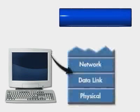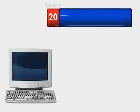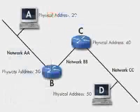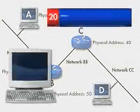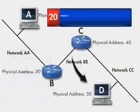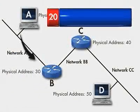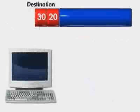Next, the packet arrives at the data link layer. The device adds its own physical address, 20, to the packet and then attempts to locate the physical device address of the destination device. In this example, the destination device is on a different network. Instead of using the physical address of Computer D, it uses the physical address of the next router in the path. In this example, the physical address of the router is 30.